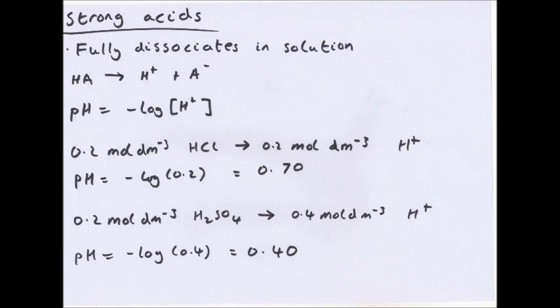Strong acids fully dissociate in solution. So all of HCl in solution will become H+ and Cl⁻. We use the concentration of H+ to work out the pH, defined as pH = −log[H+]. For example, 0.2 mol dm⁻³ of HCl gives 0.2 mol dm⁻³ of H+, because HCl is monobasic — one mole of HCl equals one mole of H+. So pH = −log(0.2) = 0.7, a very strong acid.